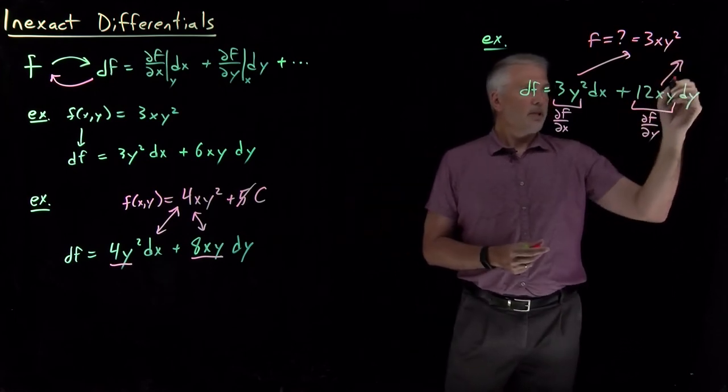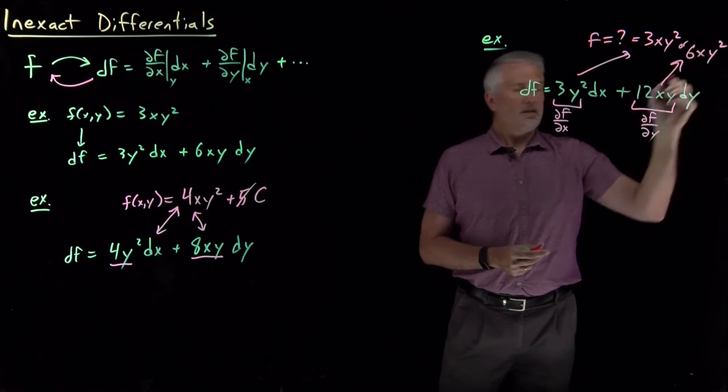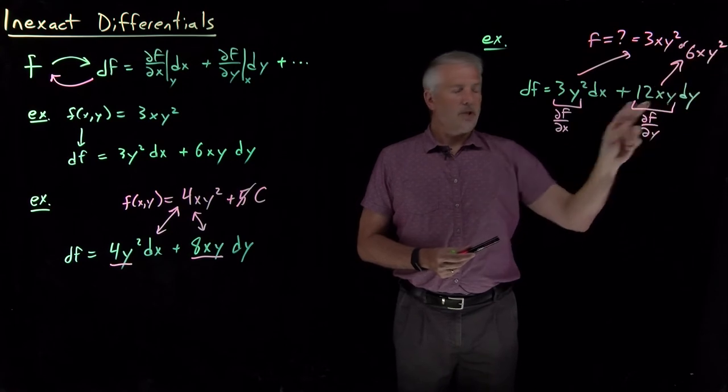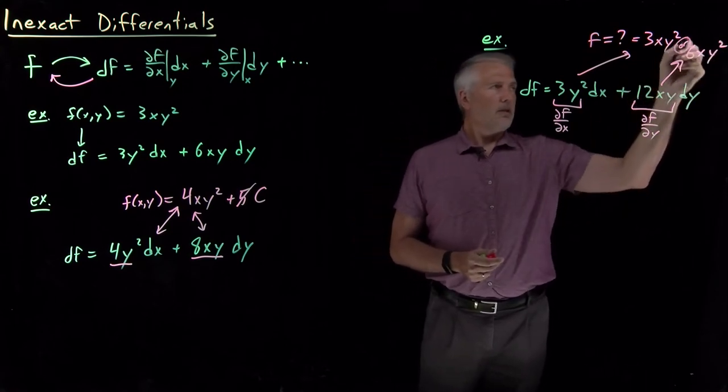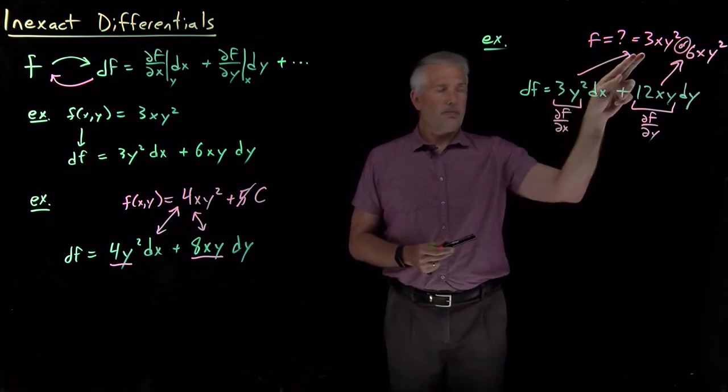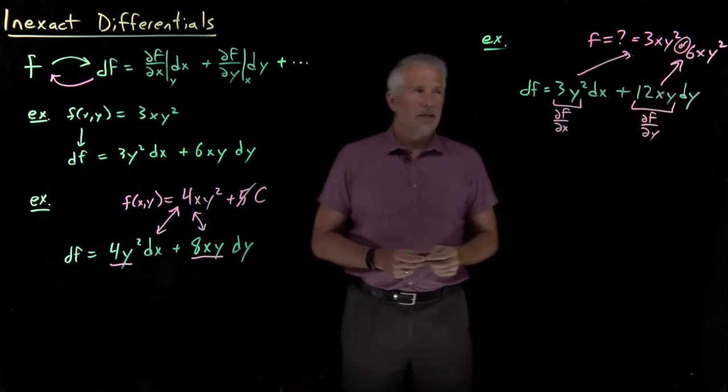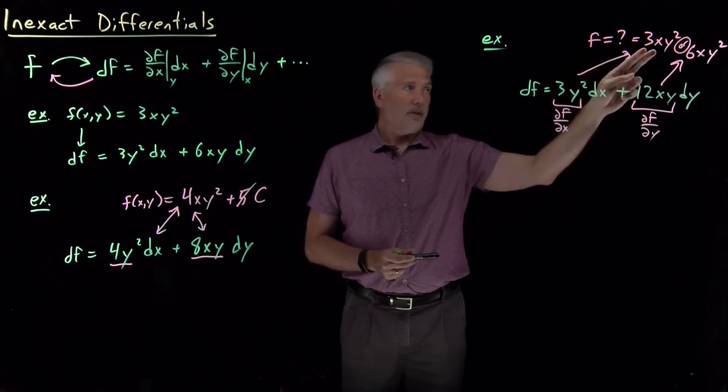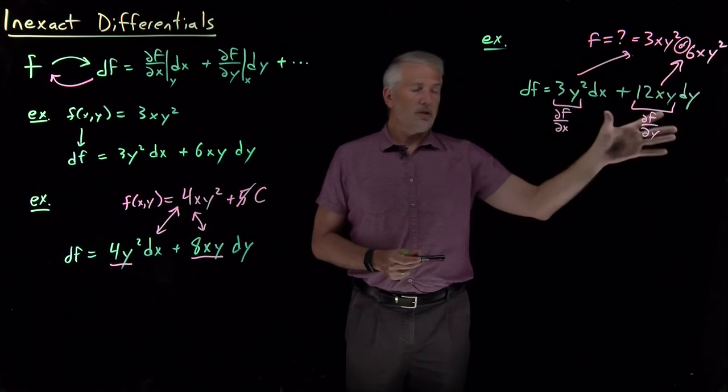6xy², if I take its partial y derivative, is going to give me 12xy. So I don't get the same function from this term predicting back what f would be as I do from this term predicting back what the f would be. So what that means is there is in fact no function f, neither this one nor this one nor anything else, has the complete differential that looks like this.